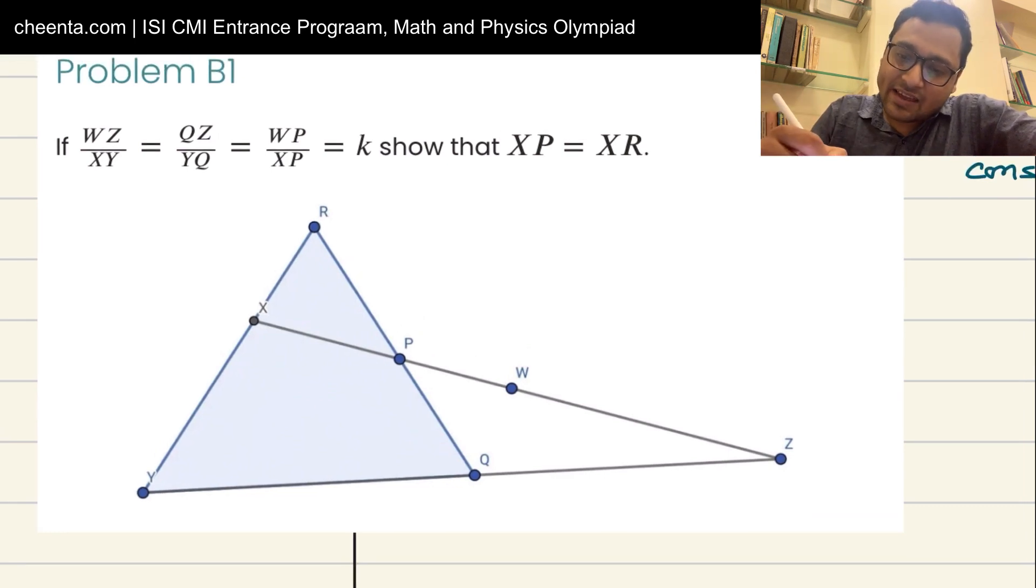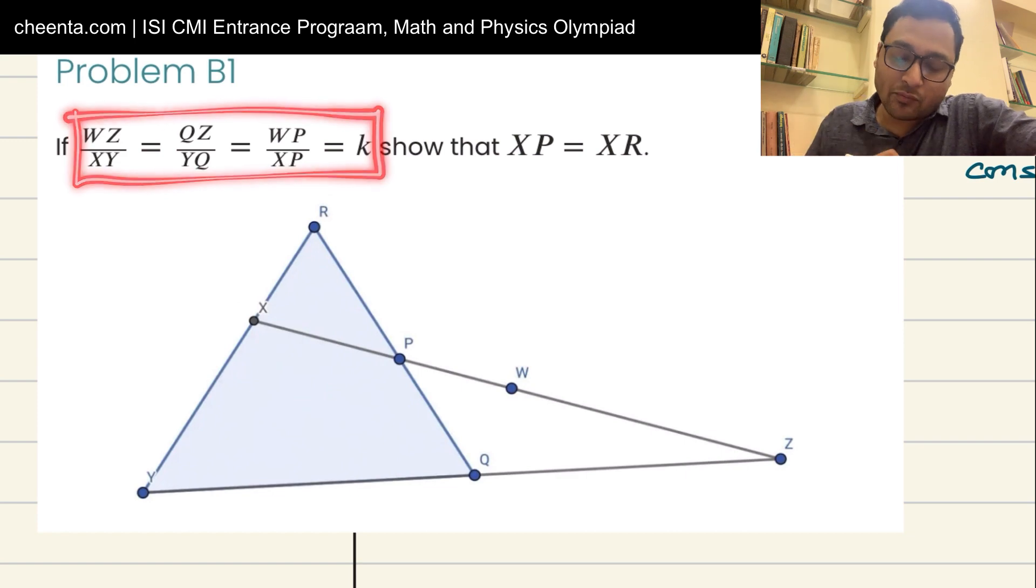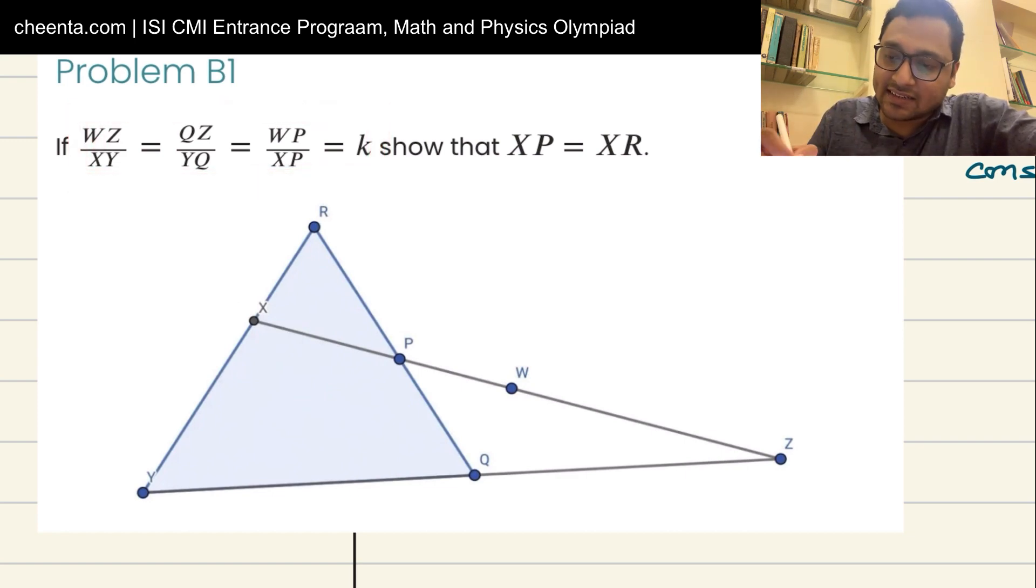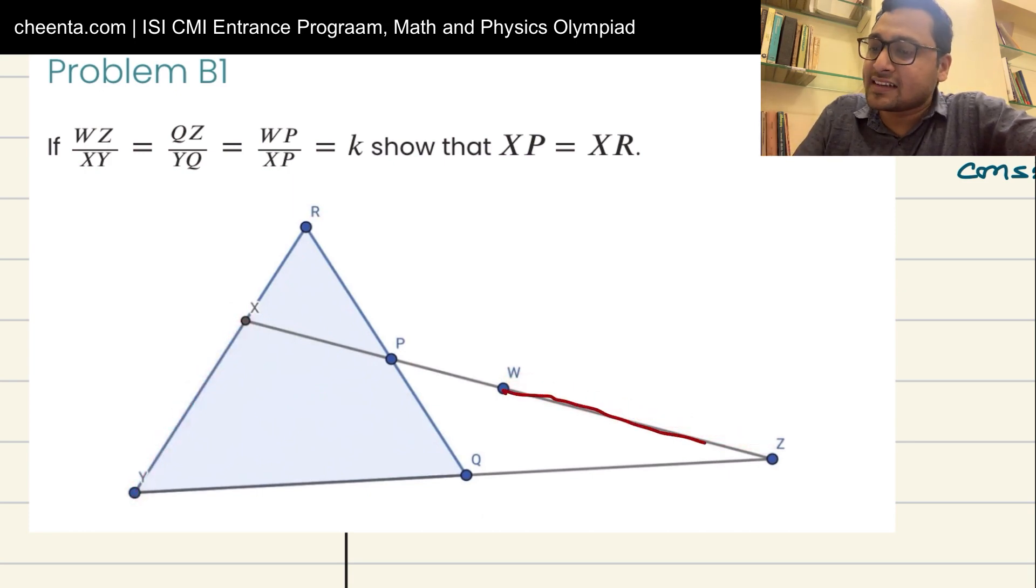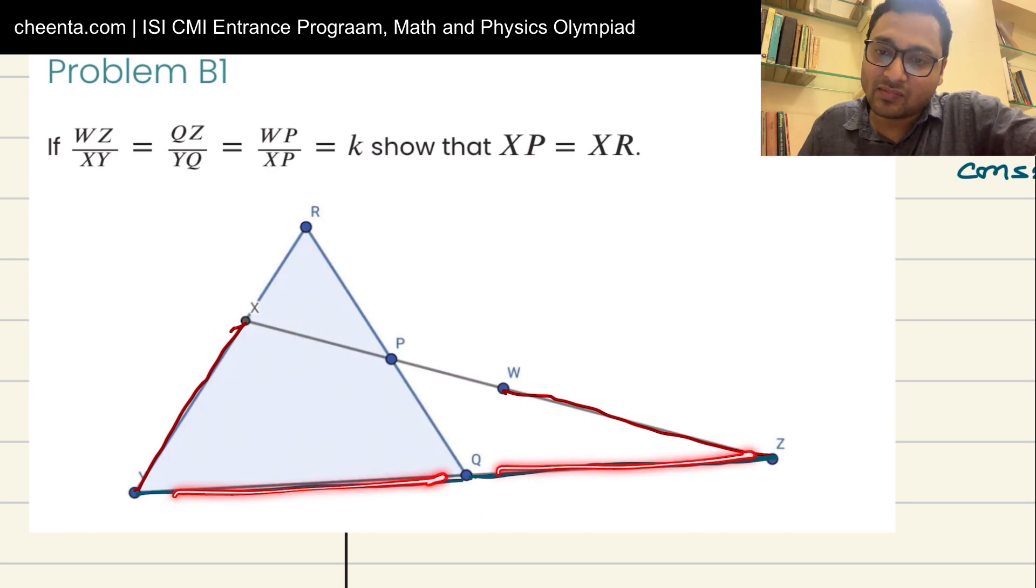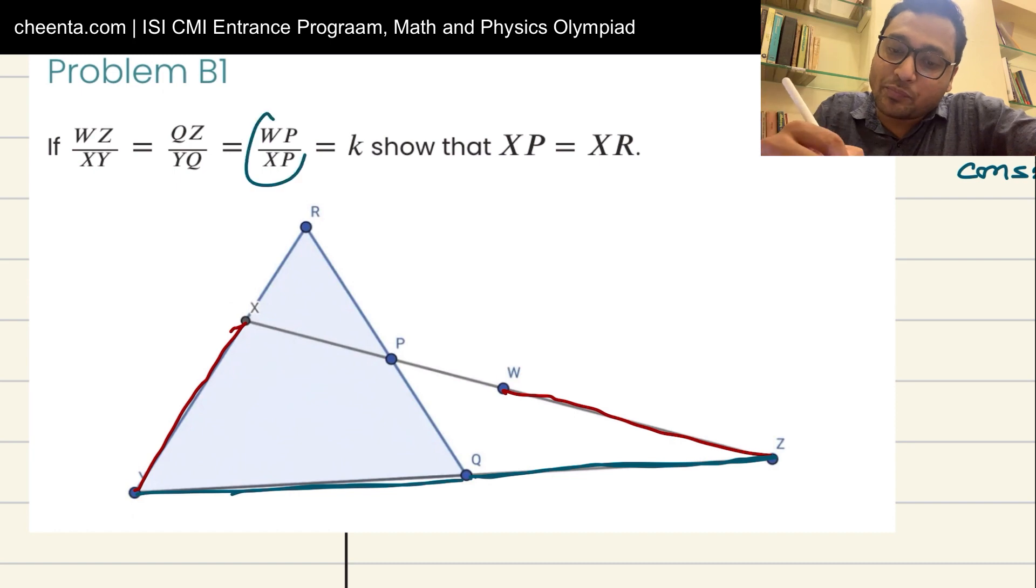It says that we have a triangle like this and a transversal line like this which hits YQ extended at Z, and there is a point W here with this particular property. This property is: WZ over XY, so WZ over XY, the red divided by red, is equal to QZ by YQ, so this green by green, and that's equal to WP by XP.